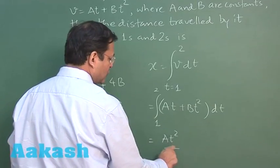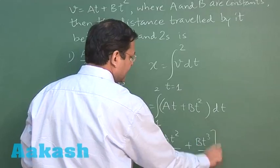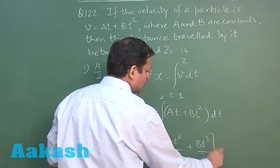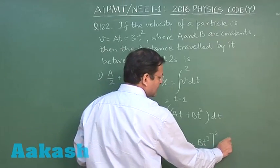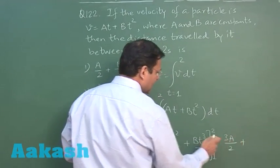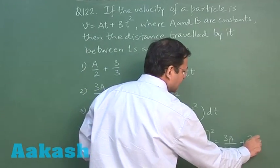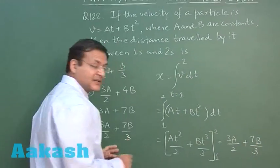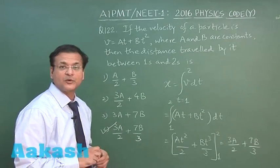You will get At square by 2 plus Bt cube by 3 in between 1 to 2. So this is 4 minus 1, 3A by 2, plus 2 cube that is 8 minus 1, 7B by 3. So for that matter the correct answer will be fourth one for this question 122.